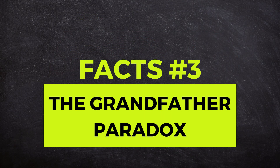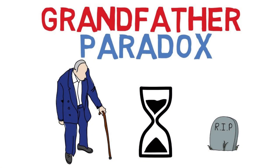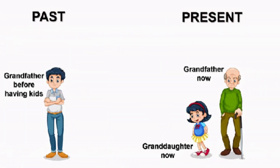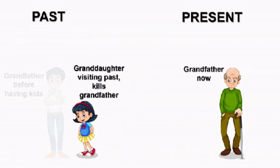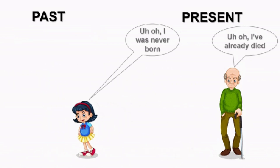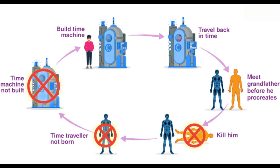Fact number three is the Grandfather Paradox. Imagine you have traveled back in time and accidentally prevented your grandparents from meeting. This paradox raises a perplexing question: if you prevented your grandparents from meeting, you would cease to exist. But if you didn't exist, how could you have gone back in time to prevent their meeting? This paradox highlights the potential logical contradictions that could arise if time travel were possible.